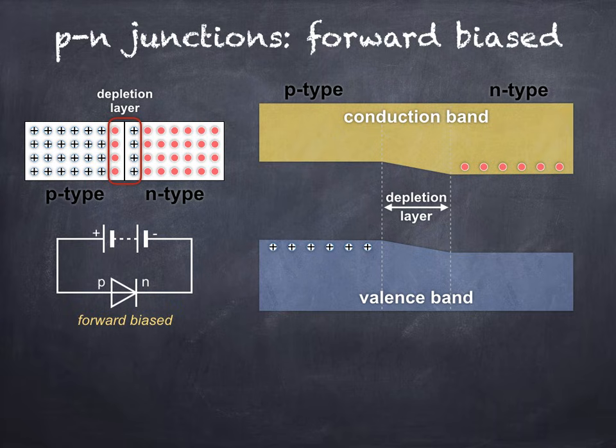When looking at the energy band model on the right, you've possibly noticed that when compared with the unbiased P-N junction, the slope in the depletion layer is reduced. This makes it easier for electrons to flow from N-type to P-type across the barrier, and similarly for holes to flow from P-type to N-type.